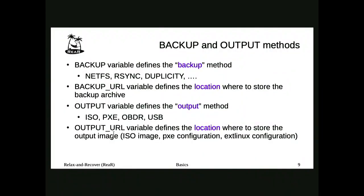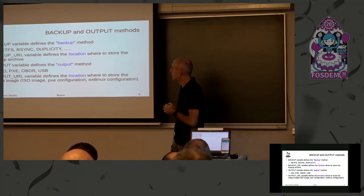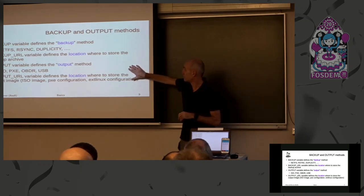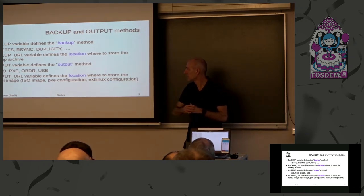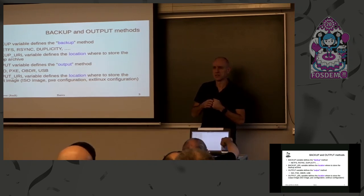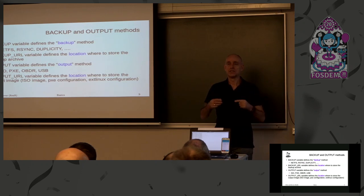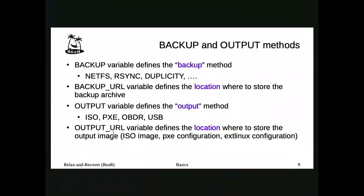The backup methods include some possibilities. Duplicity is a cloud backup solution. The backup URL defines the location of your backup — for example, BACKUP equals NETFS, which means you use internal network file sharing, NFS-like. A location must be added in BACKUP_URL. The same is true for output: OUTPUT can be ISO, PXE, OBDR, or USB. If you don't define an OUTPUT_URL, it will be the same as the BACKUP_URL — that's important to know.